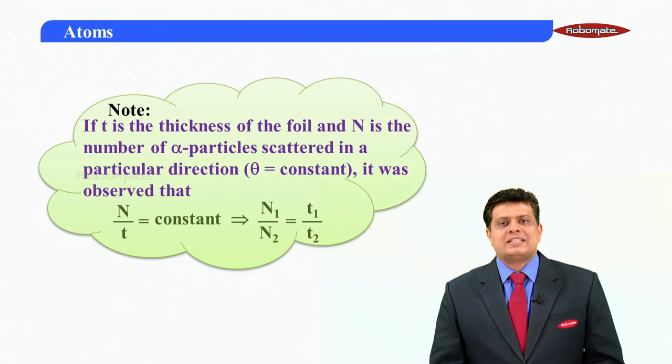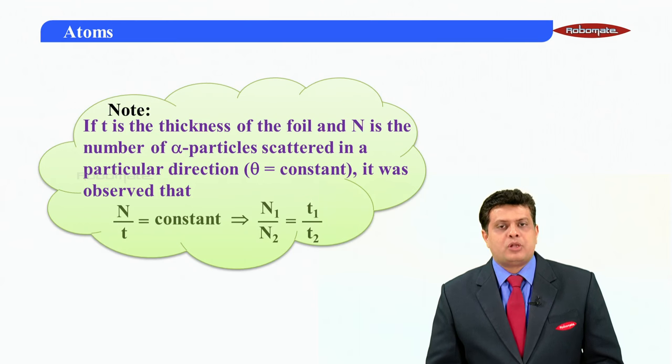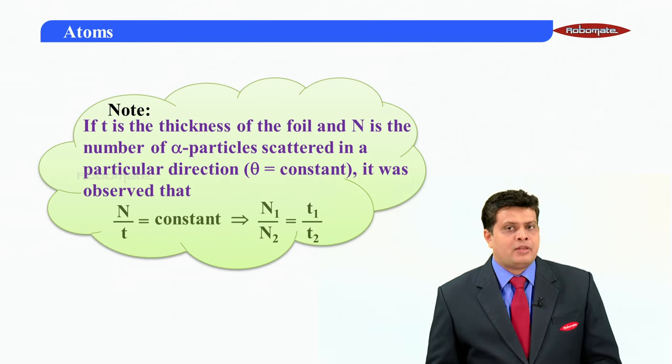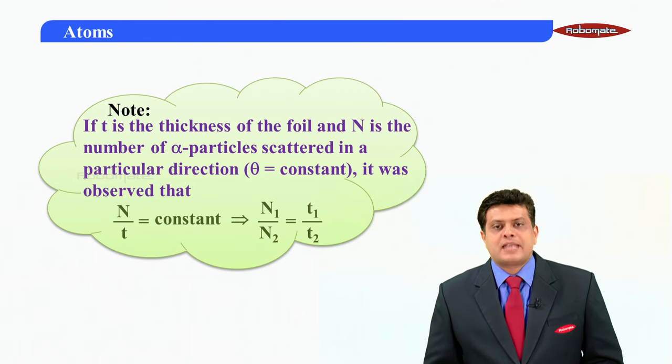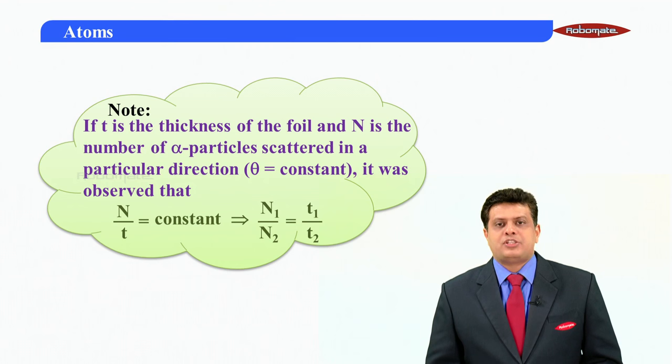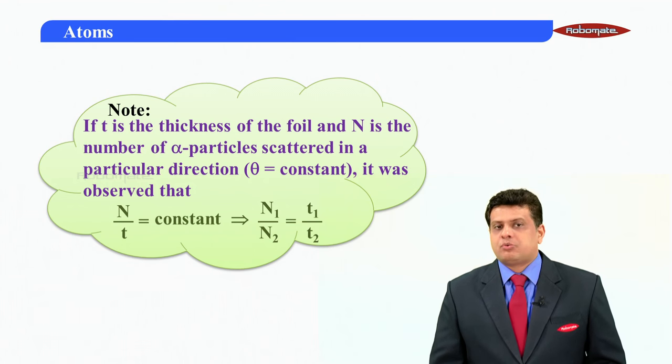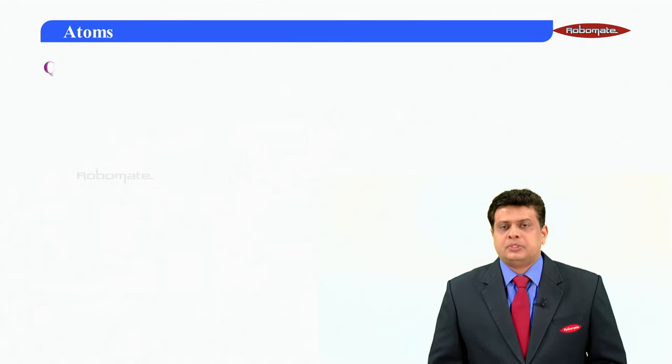If t is the thickness of the foil, n is the number of alpha particles scattered in a particular direction, where theta has to remain constant, then simply understand that n by t is constant. Number of alpha particles scattered, t is the thickness, n by t is a constant, n1 by n2 is equal to t1 by t2.